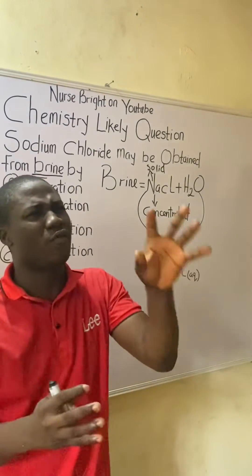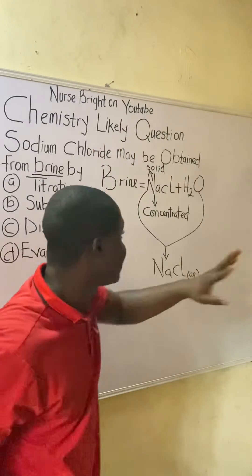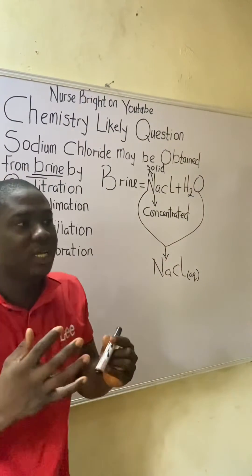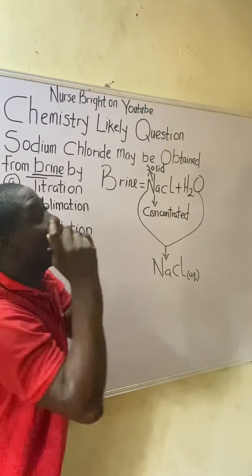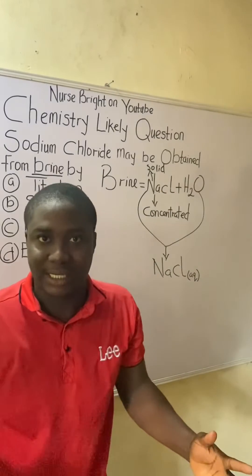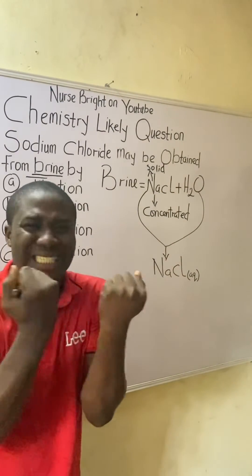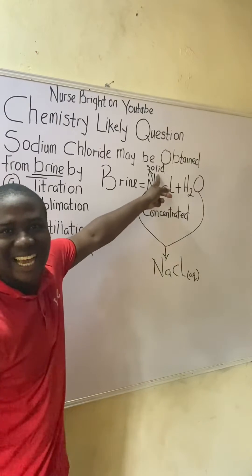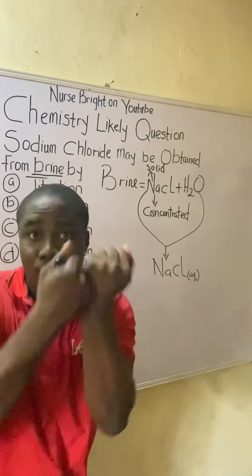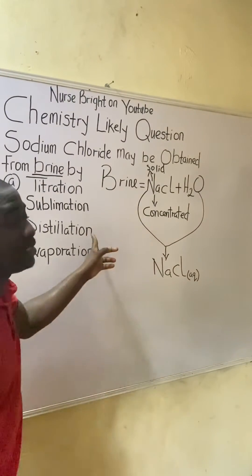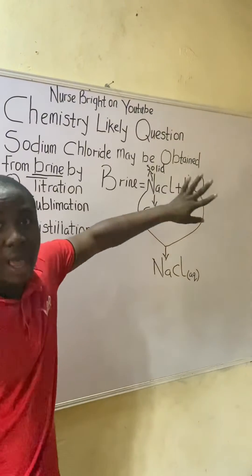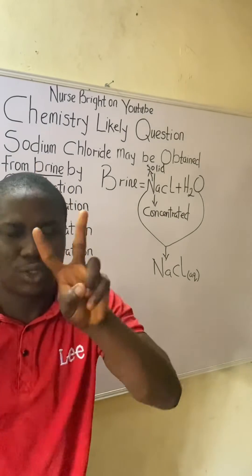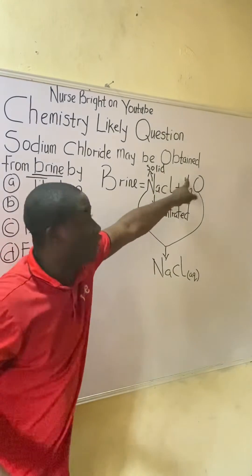Distillation cannot work here either, because distillation separates liquids based on their difference in boiling point — you need at least two liquids. Here, sodium chloride is a solid and water is a liquid. That is a solid and a liquid, not two liquids, so distillation does not apply.